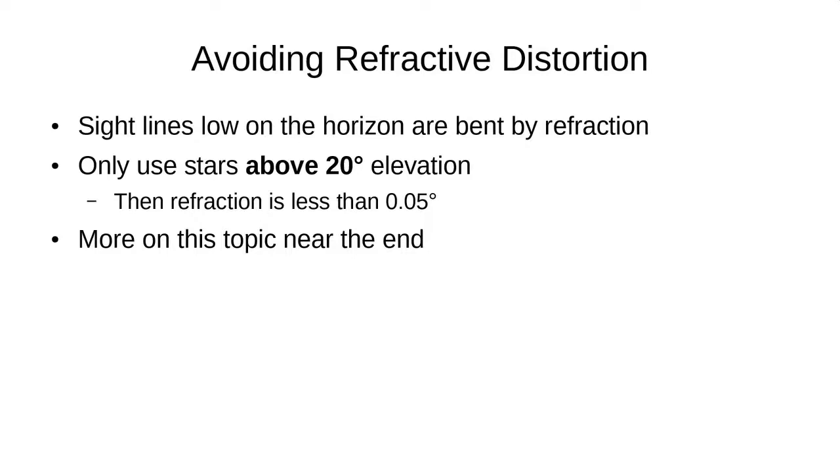Now, one issue, as I mentioned before, is that light bends near the horizon. So, we're going to restrict our observations to stars that are at least 20 degrees above the horizon. In that case, the refraction will be less than 0.05 degrees, and thus within our margin of error. And I'll talk about this a little bit more at the end.